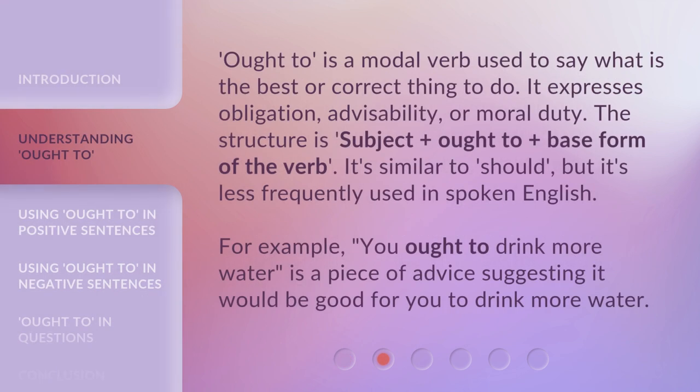Ought to is a modal verb used to say what is the best or correct thing to do. It expresses obligation, advisability, or moral duty. The structure is: subject plus ought to plus base form of the verb. It's similar to should, but it's less frequently used in spoken English. For example, 'you ought to drink more water' is a piece of advice suggesting it would be good for you to drink more water.